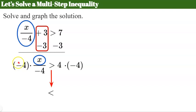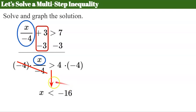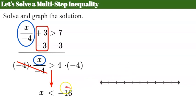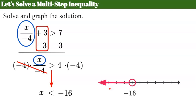Now I am multiplying both sides by a negative value, so I have to remember my rule and reverse the symbol — it's going to go from greater than to less than. Negative 4 divided by negative 4 is 1, leaving me x. And 4 times negative 4 is negative 16. There's my solution. Now we need to graph. I'm going to put my value negative 16 on my number line. I need an open circle because it's not equal to, and it's going to be everything shaded to the left.